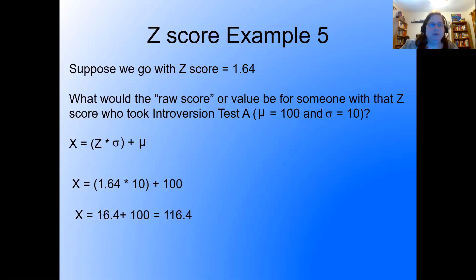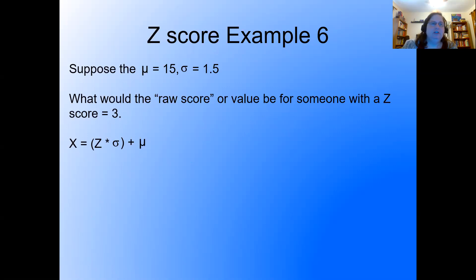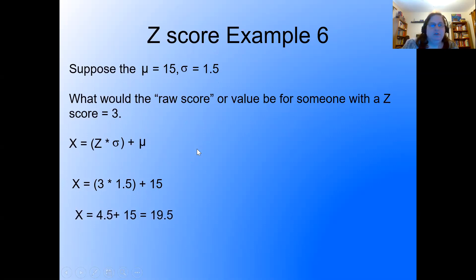Let's try once more. Suppose mu equals 15 and sigma equals 1.5. What would the raw score be for someone with a z-score of 3? Using our formula: 3 times 1.5 plus 15, which is 4.5 plus 15, giving a raw score of 19.5.